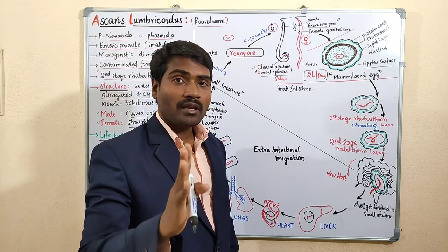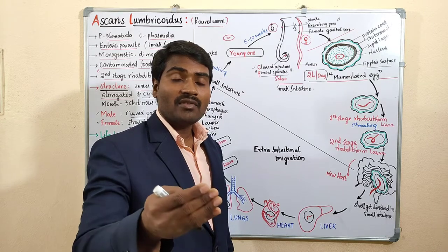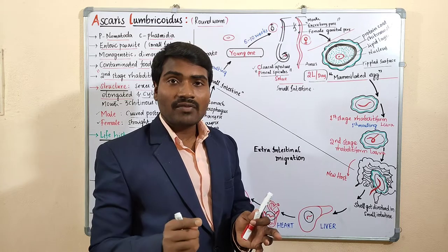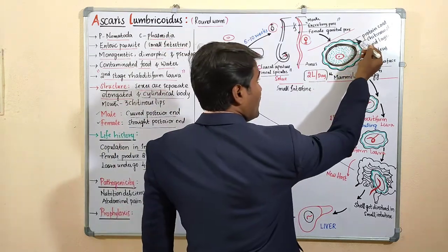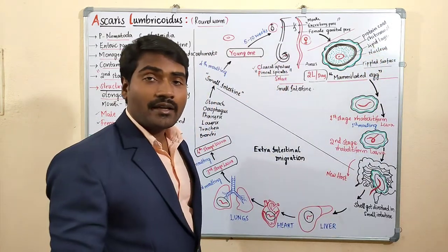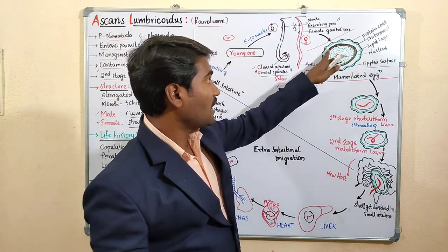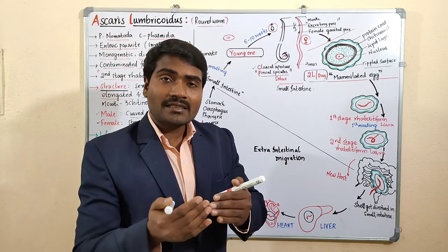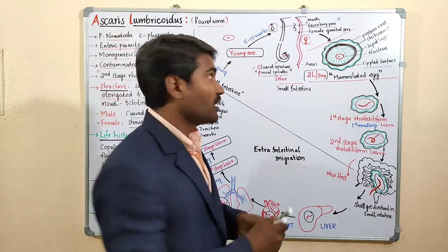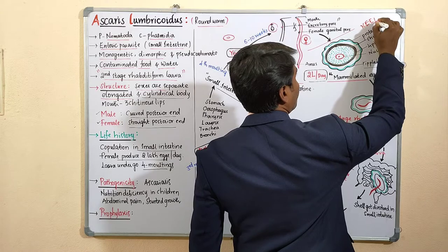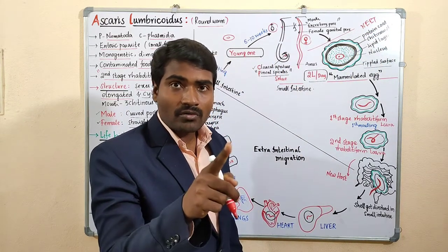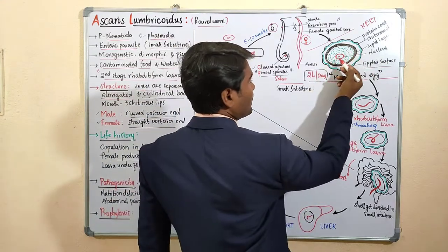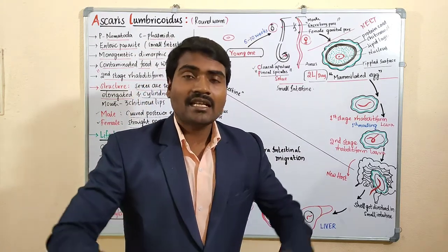Mammilated eggs are an important question in the IPE exam. These are eggs found in Phylum Nematoda or Aschelminthes, covered with a protein coat showing a rippled surface. Immediately beneath the protein coat there is a chitinous shell, and inside the chitinous shell there is a lipid layer. These three layers must be remembered, as NEET may ask you to arrange the layers of the mammilated egg from outer to inner: protein coat, chitinous shell, lipid layer, then cytoplasm and nucleus inside.